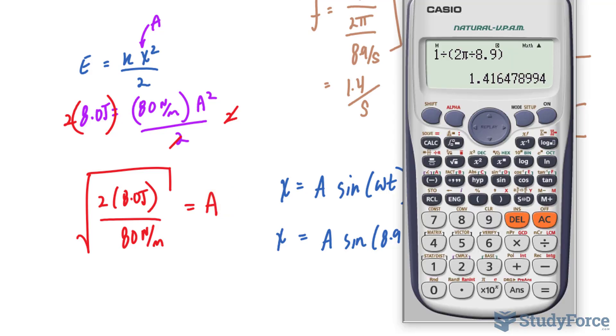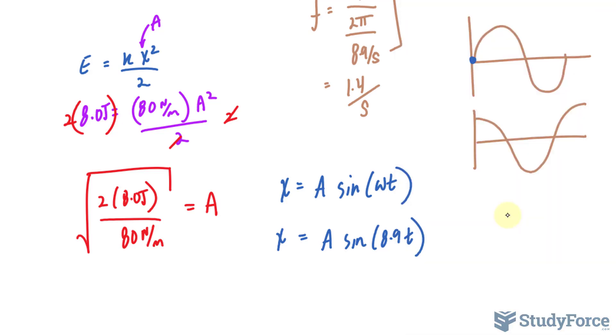And then I have 2 times 8.0 joules. Then dividing both sides by 80 newtons per meter. And square rooting will give me the amplitude in the units that I'm looking for, which is meters. So 16, because 2 times 8 is 16, divided by 80, square root of that is 0.447 or 0.45 meters. 0.45 meters is the amplitude, which is the maximum displacement. And that can be substituted in for A. You may also convert 0.45 into centimeters if you like. You can make it 45 centimeters. It's really up to you. And that right there represents the function for the displacement in terms of the time.